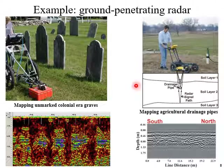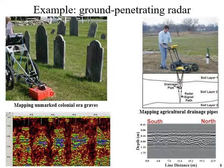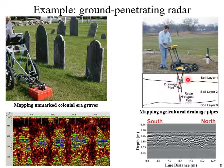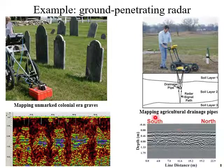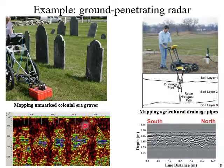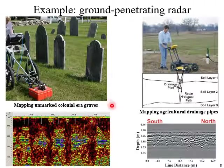Another example is the ground penetrating radar system. Here we have the transmitter and receiver system, and this is the radar signal path. This is used for agricultural purposes such as mapping of agricultural drainage pipes, and also for mapping unmarked colonial graves. All these things are possible with the ground penetrating radar system.